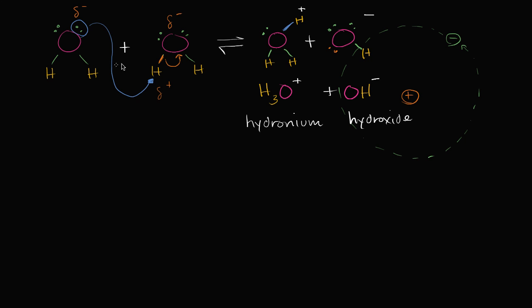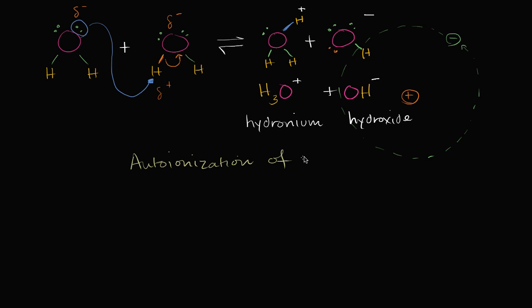So you have this water — just under the right circumstances, not happening a lot, but under the right circumstances — one of the water molecules can nab just the hydrogen proton from another water molecule, and that water molecule is going to keep both of the electrons. And then they ionize — they have auto-ionized. This phenomenon is called the auto-ionization of water.